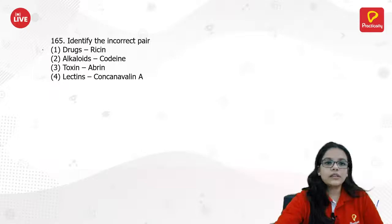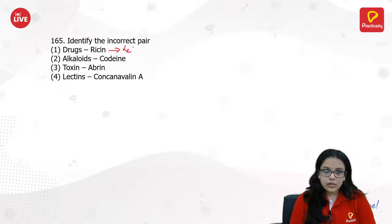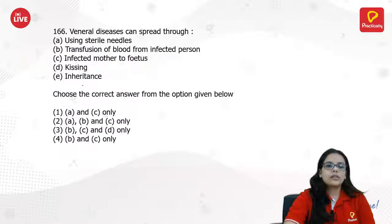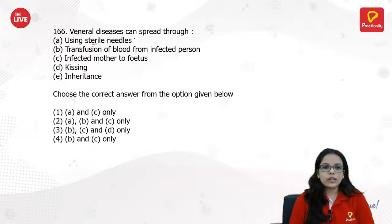Ricin is a type of lectin, and it is poisonous — not a drug. The answer for alkaloid/toxin/lectin: codeine is an alkaloid, abrin is a toxin, concanavalin A is a lectin. Venereal diseases/STDs can spread through affected needles, not sterile needles. Transfusion of blood from an infected person and infected mother to fetus — B and C only.